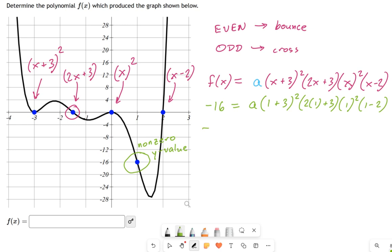And that looks like it's really busy, but watch how quickly this is going to simplify. I get negative 16 equals a times 4 squared times 5 times 1 squared times negative 1. Okay, simplify it more. We get a times 16 times 5, the 1 squared I'm not going to bother writing, times a negative 1. Well, that just pops out front as a negative sign. Okay, so this is going to turn into negative 16 equals negative 80 a.